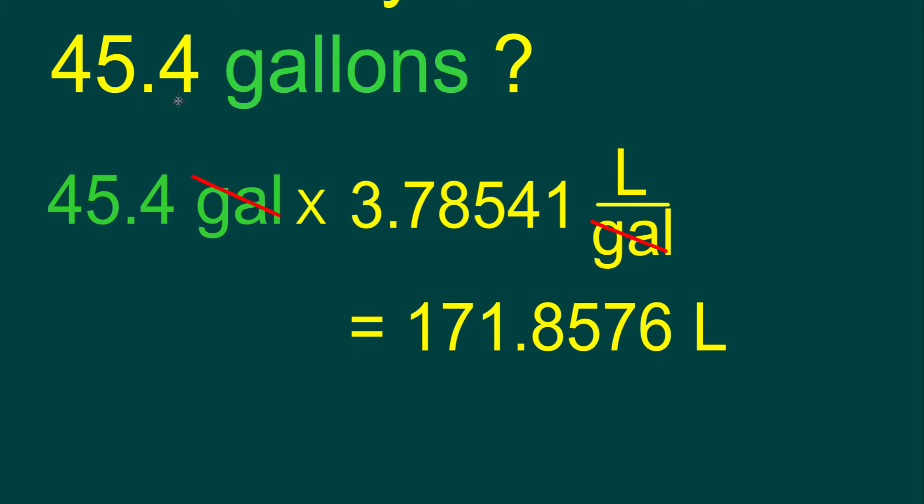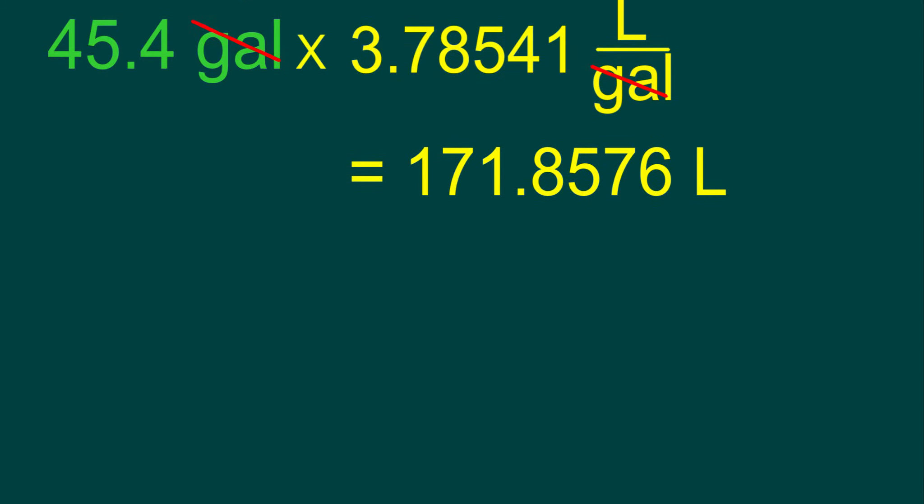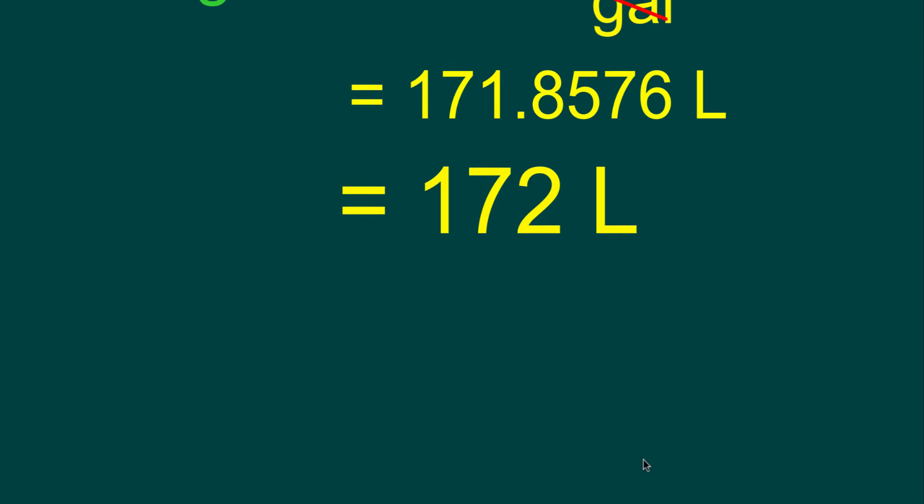We only have 3 significant digits in the question. Our final answer can only go to 3 significant digits. So, we'll round it, 171.8576 would be rounded to 172 liters. Or, we can say that 45.4 gallons is equivalent to 172 liters.